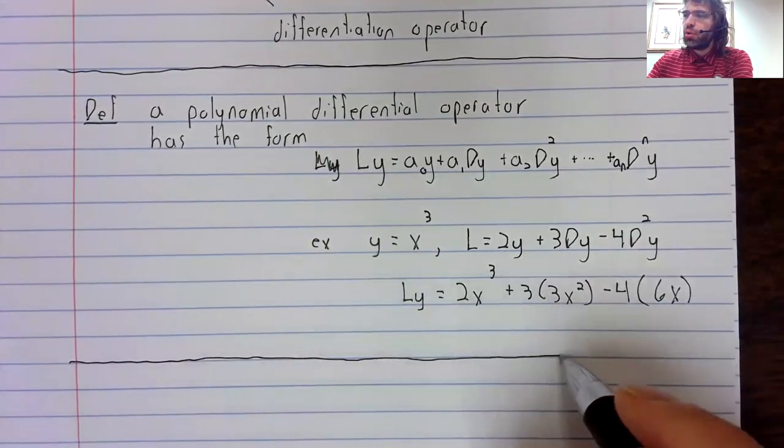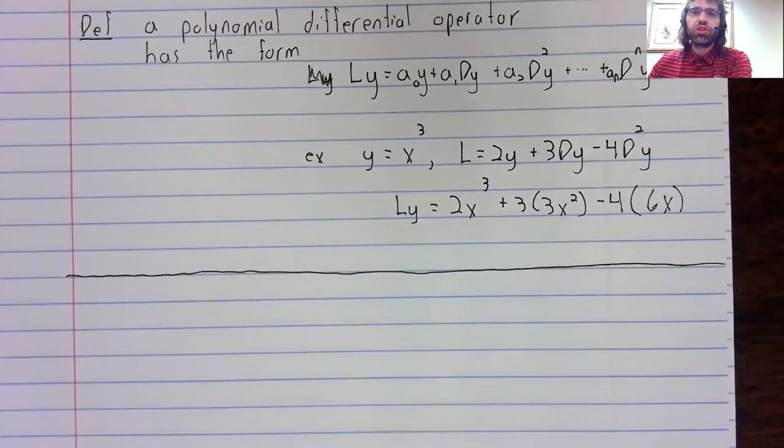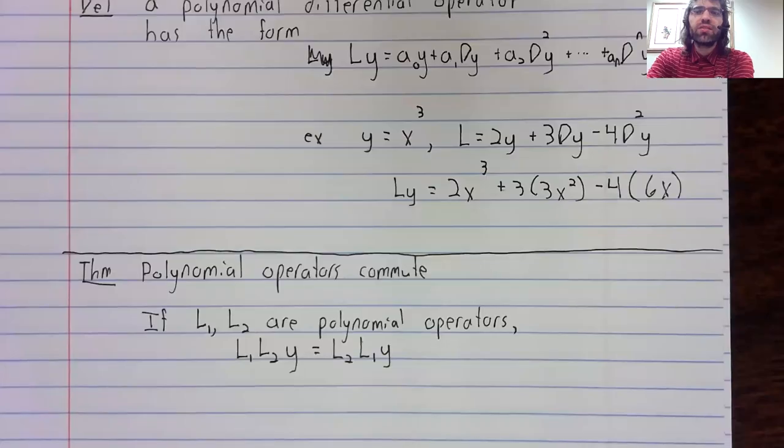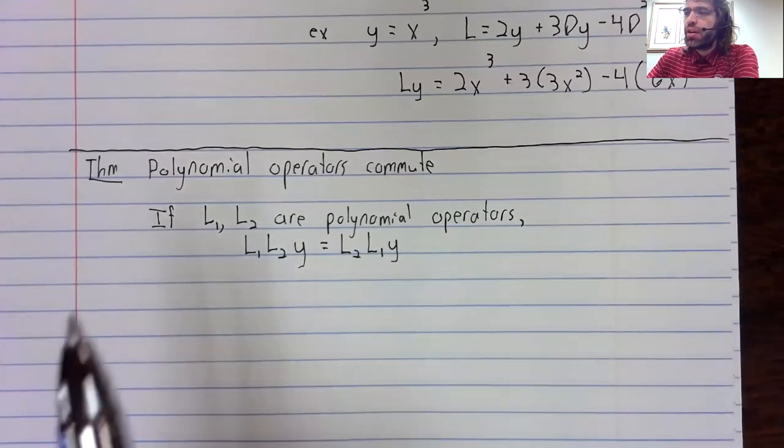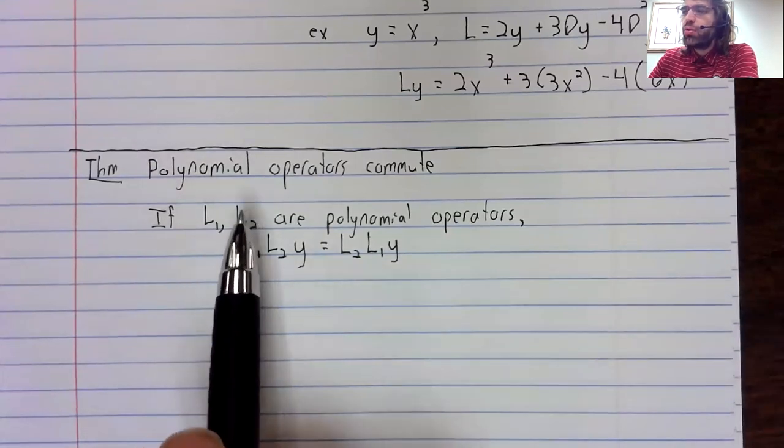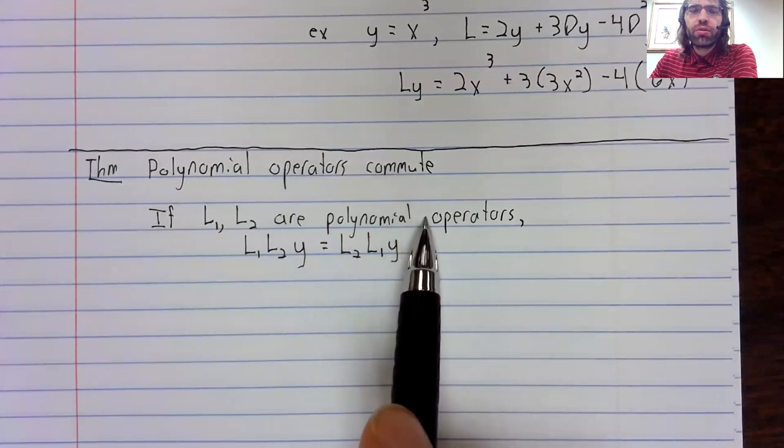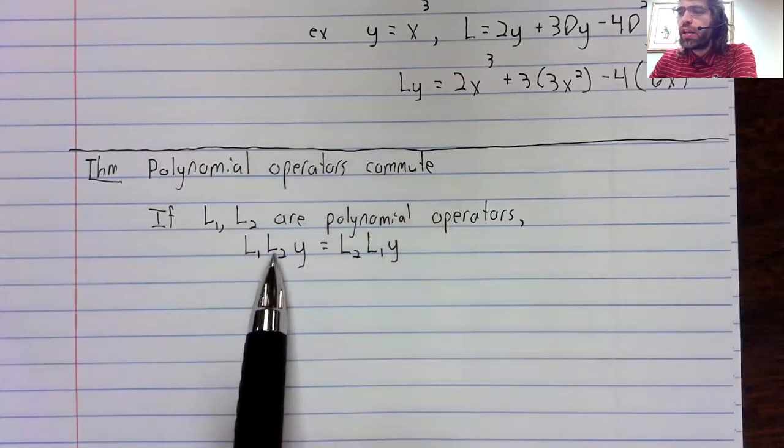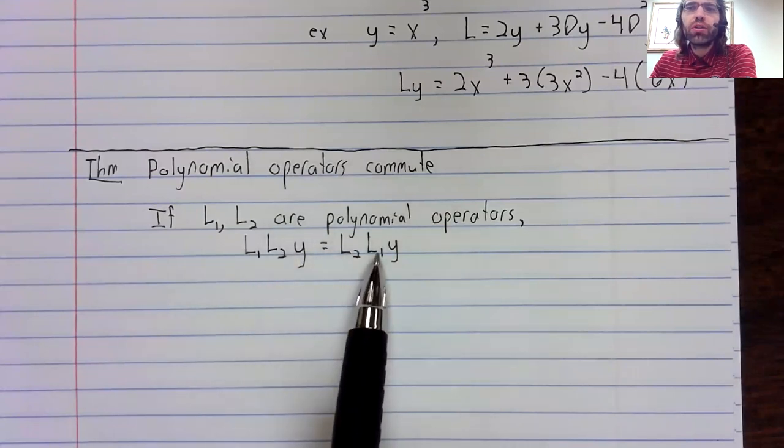Polynomial operators have a very special property, and that's that they commute. If L1 and L2 are polynomial differential operators, then L1 L2 y equals L2 L1 y.